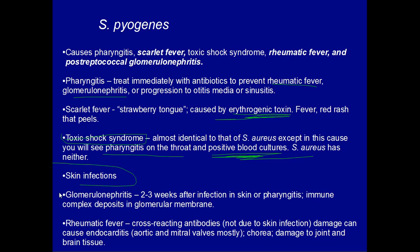Streptococcus pyogenes can cause glomerulonephritis by having immune complexes deposit in the glomerular membrane, and you'll get symptoms of kidney disease such as edema. Rheumatic fever causes cross-reacting of the antibodies and damage, causing endocarditis at the aortic and mitral valves mostly. This is different from the endocarditis caused by drug users with S. aureus infections, because S. aureus usually infects the tricuspid valve. Rheumatic fever also causes damage to joint and brain tissue — here you see chorea, which are spastic dance-like movements.